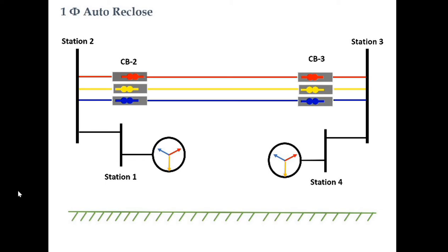Permanent faults include breaking or snapping of a conductor, or even the falling of a big tree or tree branch over the line permanently. The behavior of the relay for any kind of fault — transient or permanent — would be the same. For a transient fault, the relay will give a trip command to the circuit breakers, and for a permanent fault also, the relay will give a trip command to the circuit breaker.